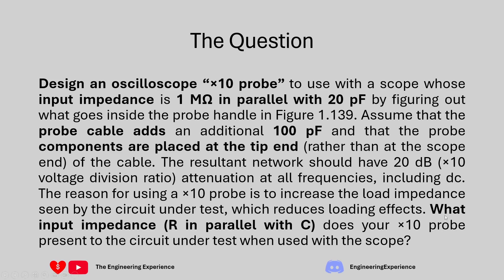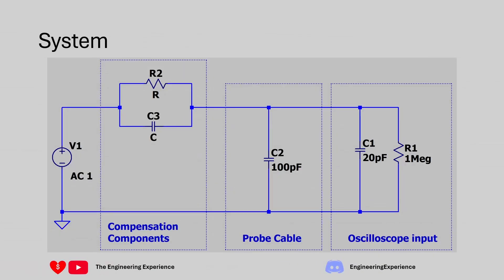The question gives us a clue in that we are using an RC in parallel, and we need to show what impedance the probe will present to the scope when used together. Since it is a 10x probe, any input voltage is going to be divided by 10 as it goes into the scope — so a 100 volt signal goes down to 10 volts. Using the information and figure provided, we can draw a simple representation of the circuit.